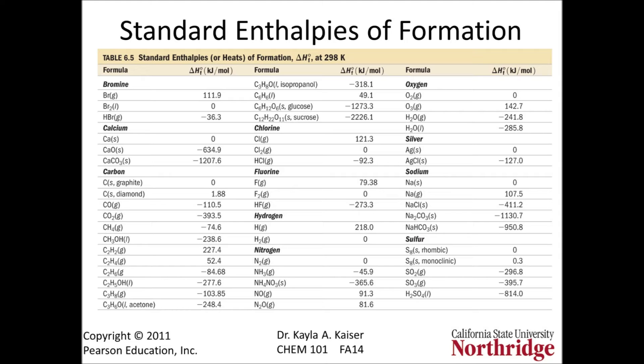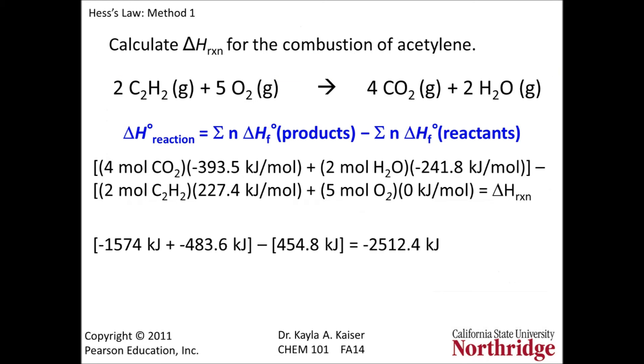Most enthalpies of formation are exothermic or heat releasing, since as compounds form there is a gain in stability. However, for the formation of some unstable compounds or those with high chemical potential energy, the enthalpy of formation may be endothermic. For elements in their standard states, such as diatomic oxygen gas, the enthalpy of formation is zero.